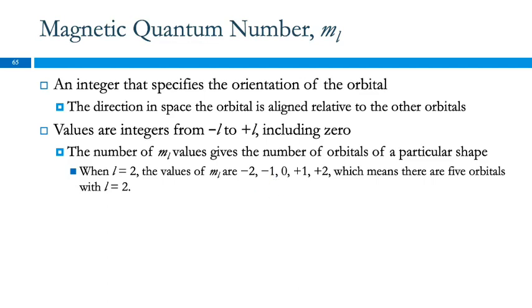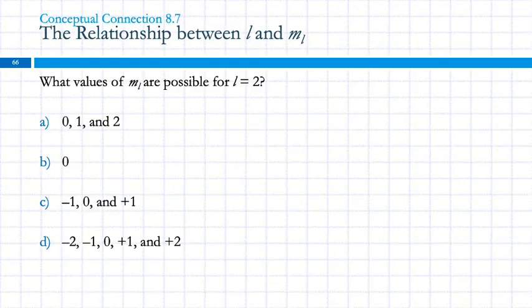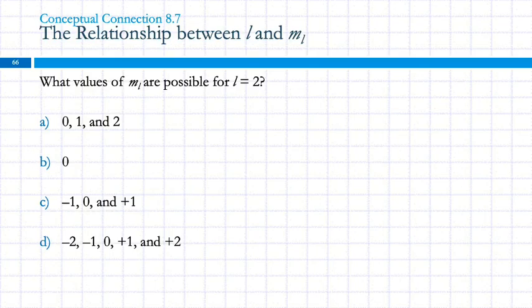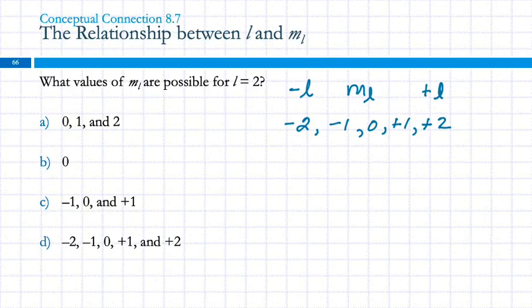I'm going to give you an analogy in a few minutes to hopefully pull this all together, because I know this is just random-sounding stuff. What values of m sub l are possible for l equals 2? m sub l goes from minus l to plus l. So if l is 2, we've got negative 2 up to positive 2 — that's negative 2, negative 1, 0, positive 1, and positive 2. So that would be choice D.